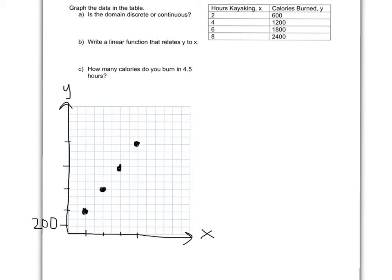Now, before I connect them, I need to decide letter A, is the domain discrete or continuous? Does it make sense for me to get values in between these four data points? Or are these really the only four data points that make sense? And if you think about it, you can kayak for two and a half hours, and you can burn 823 calories. So it does make sense for them to be connected. So I will connect it. And I'm not going to go into the negatives. But the domain is continuous.